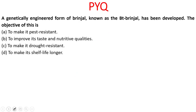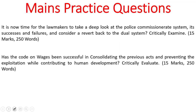Consider the following statements with respect to the State Legislative Council: five-sixths of the total members are indirectly elected and one-sixth are nominated by the governor; the maximum strength of the council is fixed at one-fourth of the total strength of the assembly and minimum strength is fixed at 40. Which statements are correct? The answer is statement 1 only — because it is not one-fourth but one-third. Next practice question: a genetically engineered form of brinjal known as Bt Brinjal has been developed. The objective is to make it pest resistant, improve taste and nutritive qualities, make it drought resistant, or make its shelf life longer. The answer is to make it pest resistant. Now for the mains practice questions — please write all your answers in the comment section for peer review. If you liked our initiative, please like and subscribe to our YouTube channel. Thank you for watching — all the best!